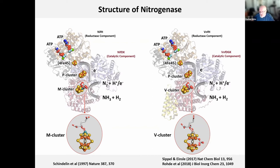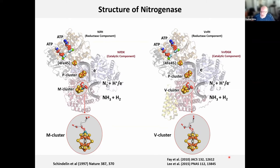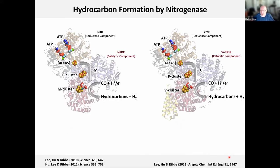If you compare the active sites, the V-cluster has molybdenum replaced by vanadium, and one of the belt sulfurs is replaced by a carbonate atom, as revealed by the crystal structure. However, when you extract the cluster from the protein, EXAFS analysis suggests that during extraction, the carbonate gets replaced by a sulfur. There is still a difference in the hetero metal between the molybdenum and vanadium systems, and we believe these differences contribute to observed differences in substrate-reducing abilities.